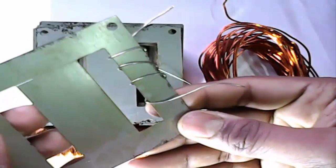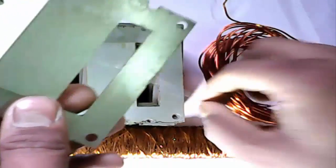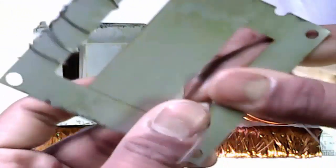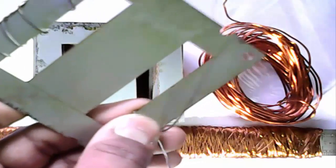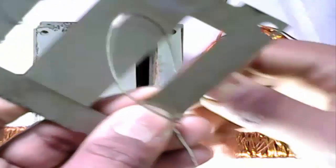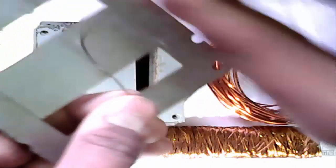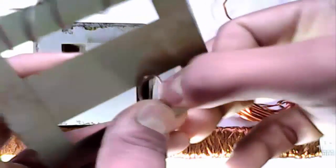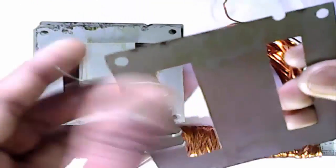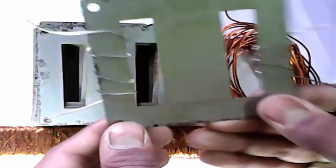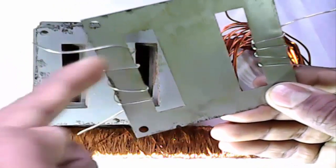See, this is iron sheet. Now other iron. Wrapping perfectly. See, this is wrapping system.